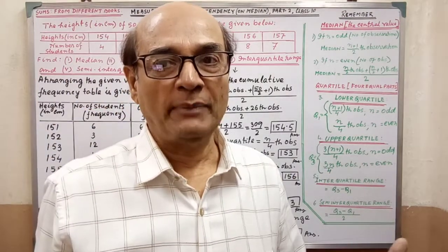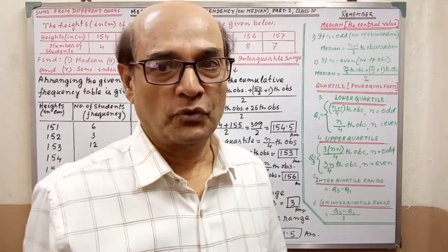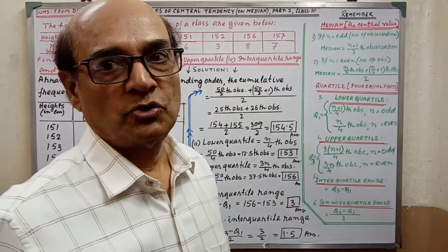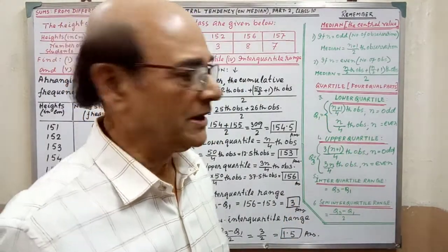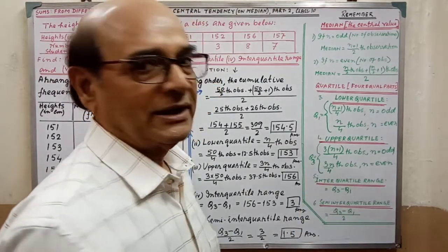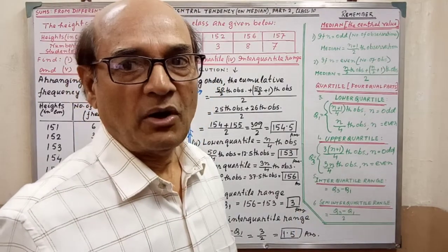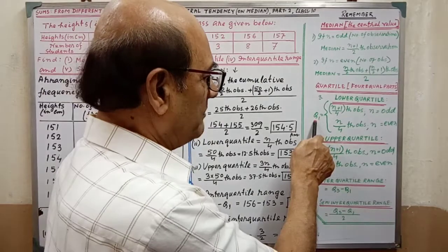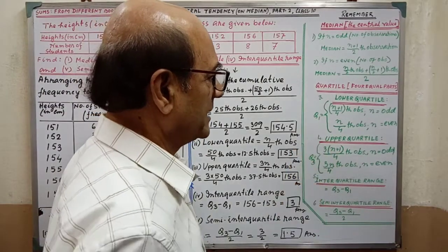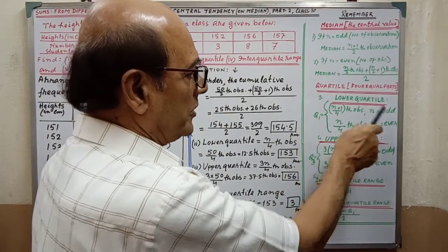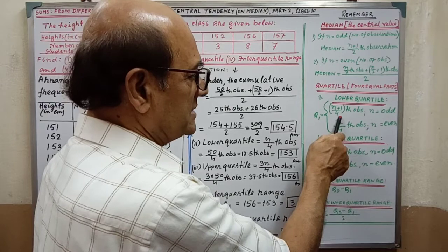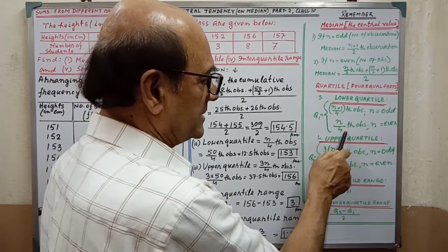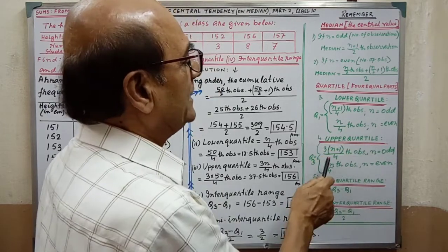Quartile means dividing the observations into four equal parts. The lower quartile is also known as the first quartile (Q1), and the upper quartile is also known as the third quartile (Q3). In the case of an odd number of observations, Q1 is the (n+1)/4 th observation.